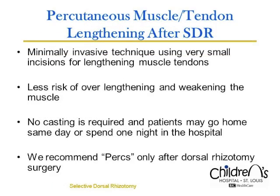Percutaneous muscle-tendon surgery is a conservative approach to muscle lengthening. It is done through a small opening in the skin where a controlled lengthening is performed. There is significantly less risk of over-lengthening the muscle with this technique. Patients require no casting, and in most cases, no hospital stay. Patients are indicated for this procedure only after an evaluation by both Dr. Dobbs and Dr. Park. We recommend the Percs only after dorsal rhizotomy surgery.